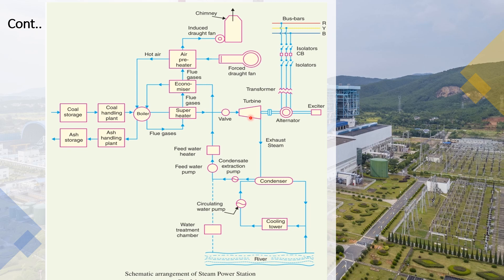The flue gases from the boiler pass through the superheater. We utilize the heat from the flue gases. The steam then goes to the turbine, converting heat energy to mechanical energy, which drives the alternator. The output passes through the transformer, isolator, and circulator.